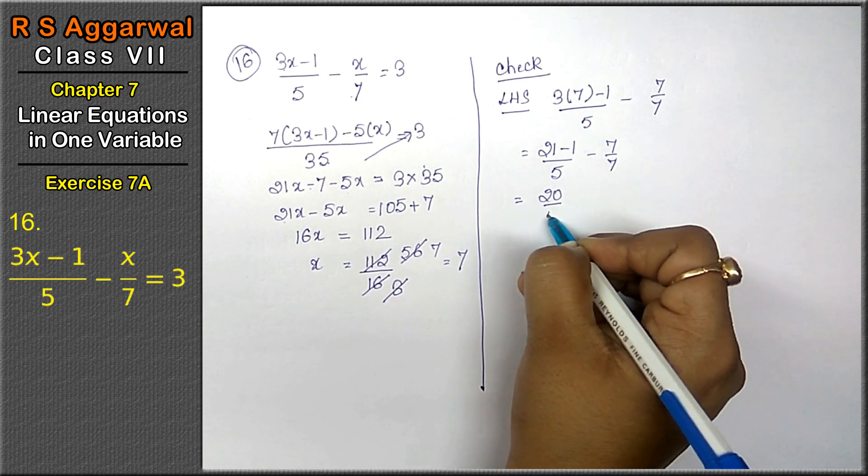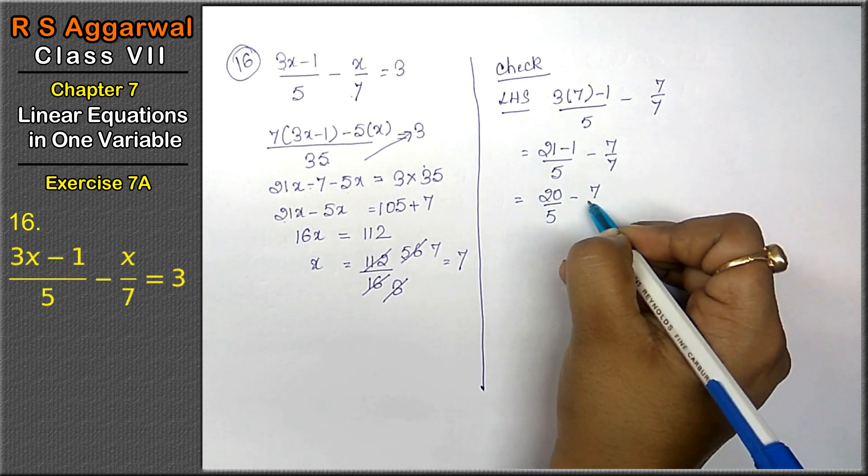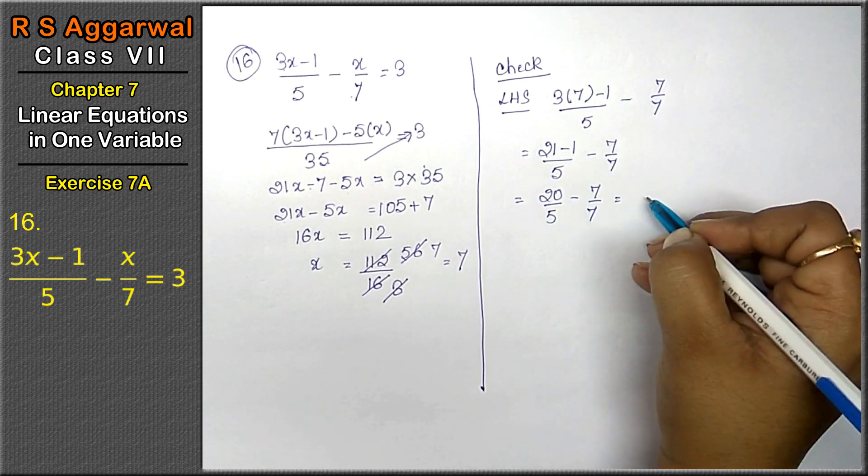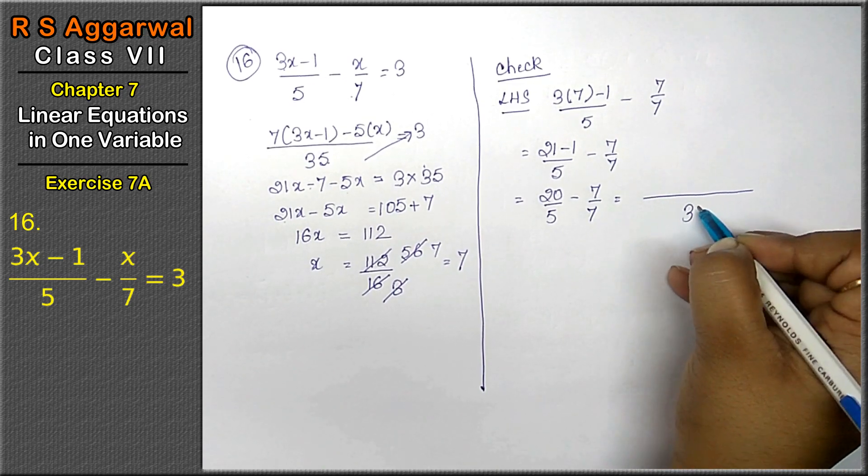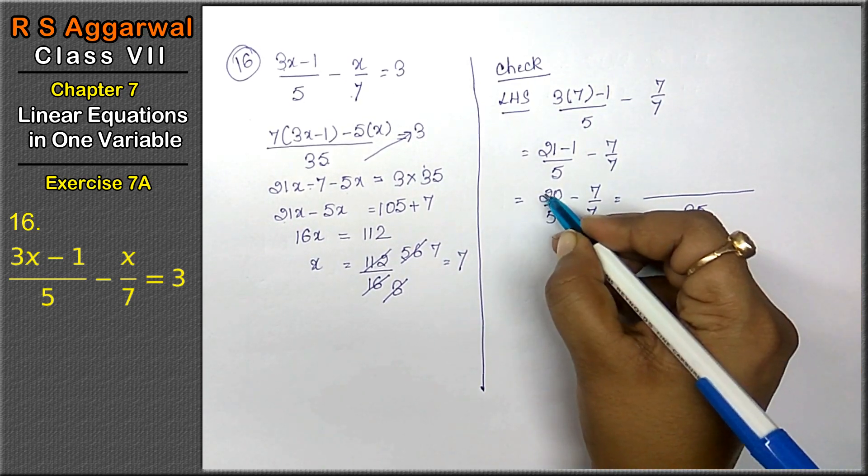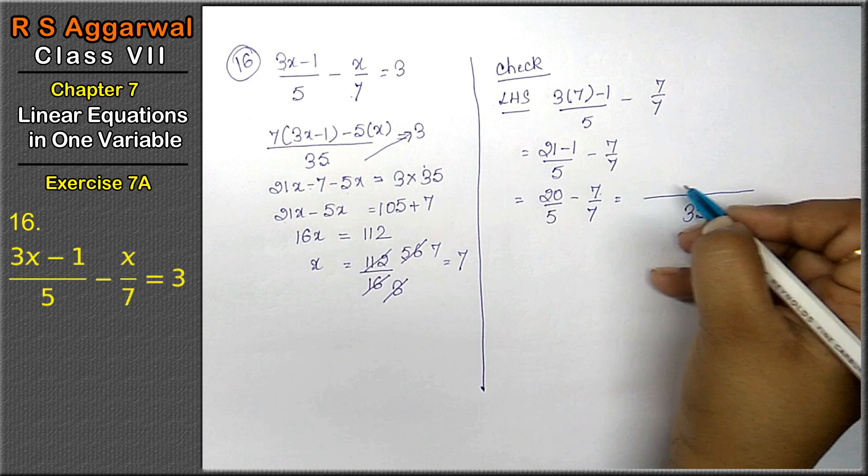20 upon 5 minus 7 upon 7. Let's take the LCM. LCM is 35. Its multiplication is with this. Its multiplication is with this.